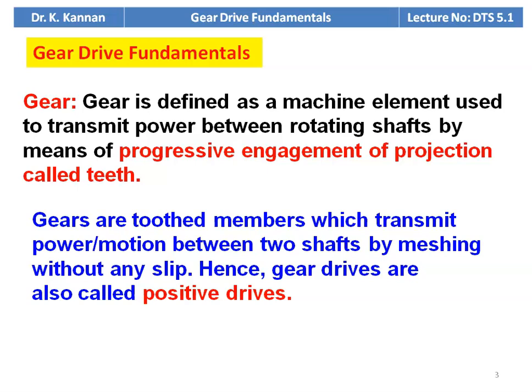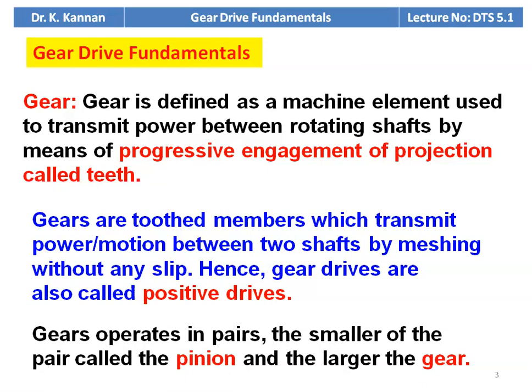In the earlier drives — flat belt, chain drive, and V-belt — there is a possibility of slip. Gear drives are slipless and hence are called positive drives. Gears operate in pairs: the smaller of the pair is called the pinion and the larger is called the gear. They engage progressively to transmit power or motion.